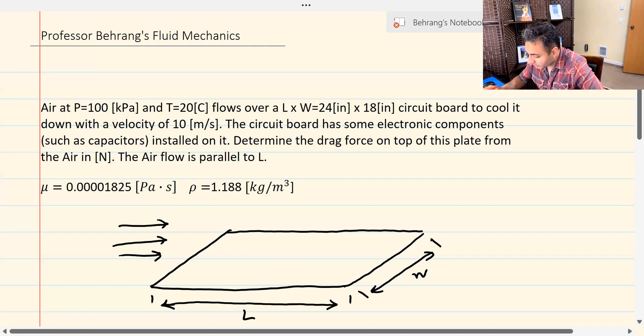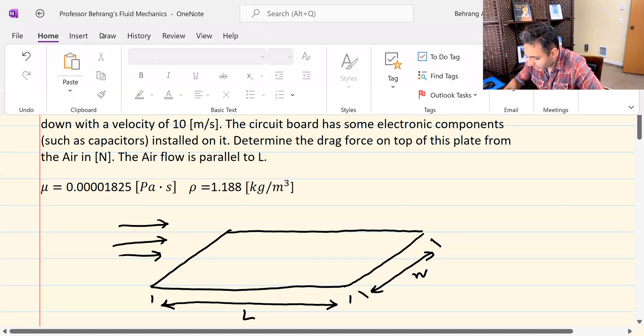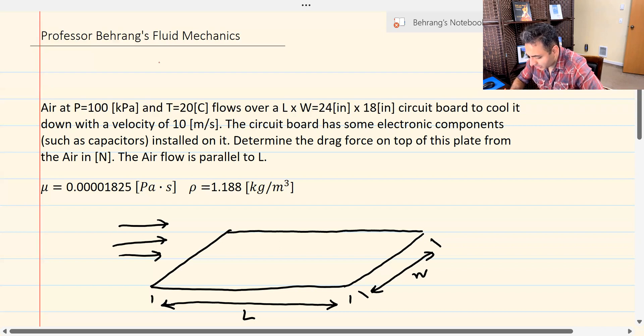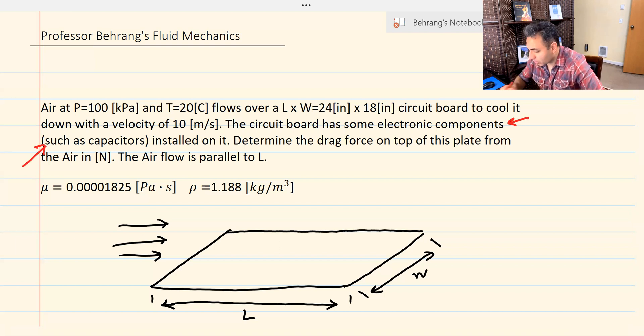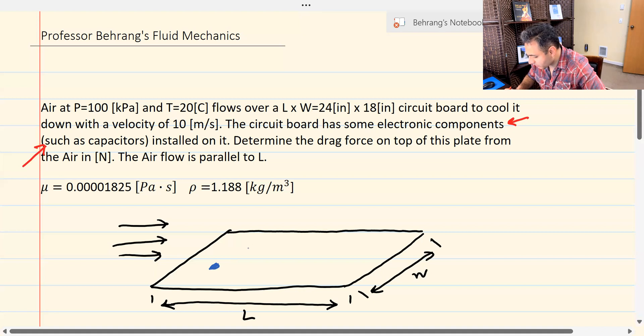However, if you take a look at this problem, there's one key information that you need to pay attention to. And that is, this is a circuit board. And because it's a circuit board, there are some electronic components such as capacitors, resistors, things like that are installed on this thing. If we have capacitors and resistors and things like that on it, they're going to trip the boundary layer.